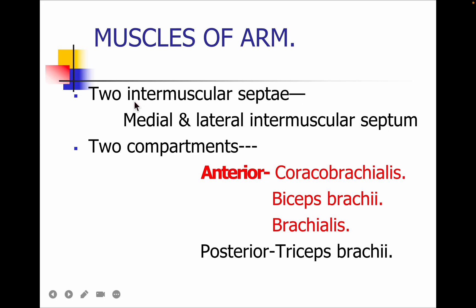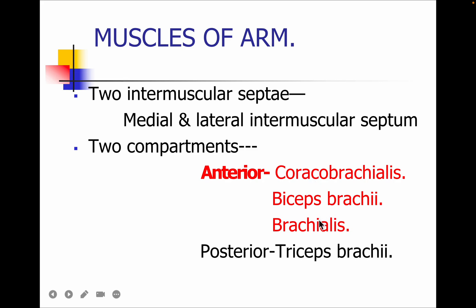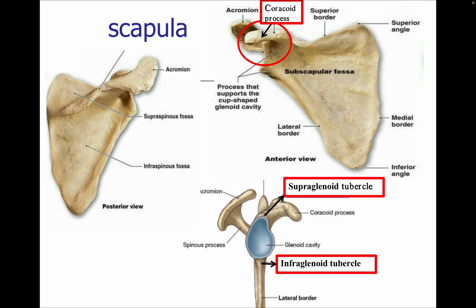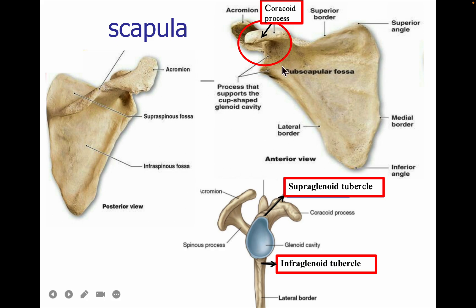With the help of the two intermuscular septa — medial and lateral — the arm is divided into two compartments. The muscles in the anterior compartment are: coracobrachialis, biceps brachii, and brachialis. In the posterior compartment, the muscle is the triceps. Before dealing with all these muscles, let's review some features of the scapula, humerus, radius, and ulna bones.